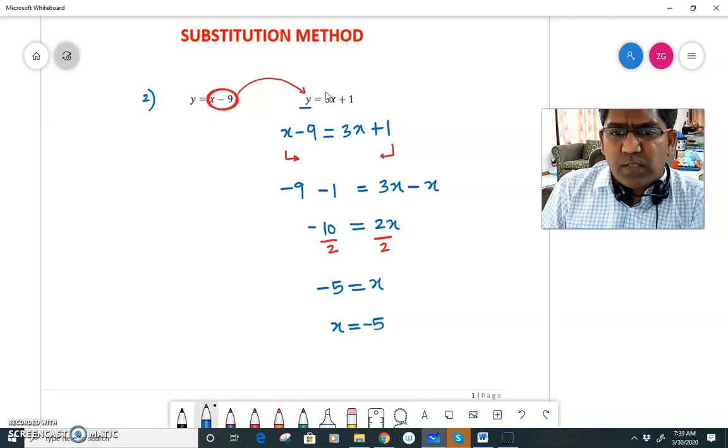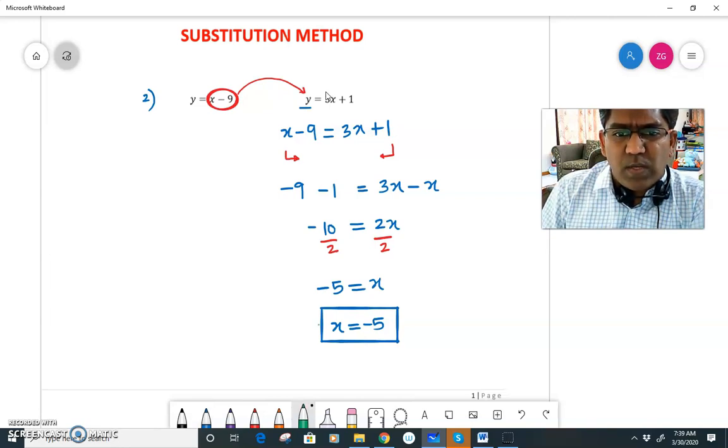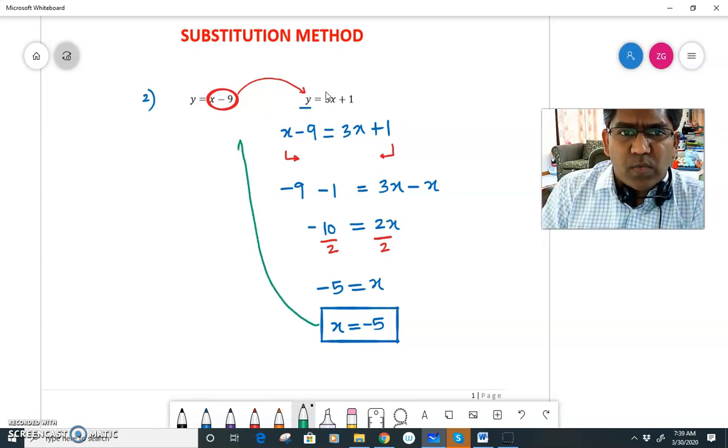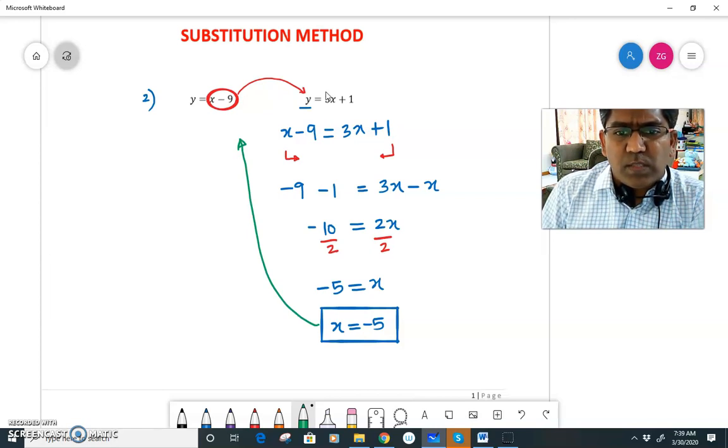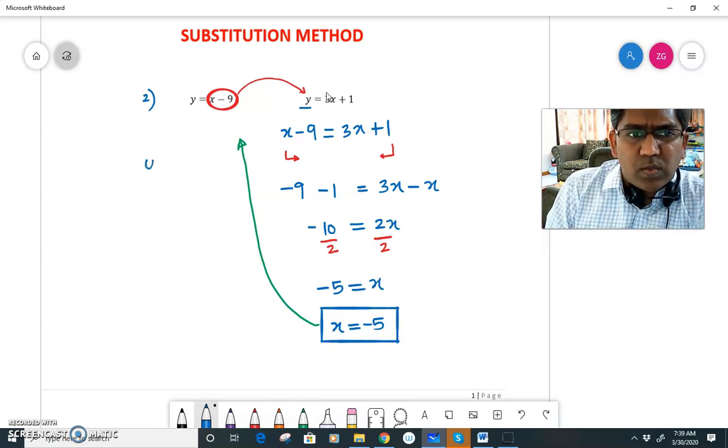Now once I got the value of x, I need to find the value of y. To find the value of y, what I'll do is I'll plug this value back in the first equation. So let's substitute x equal to minus 5 in equation 1.